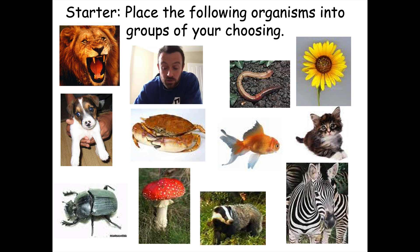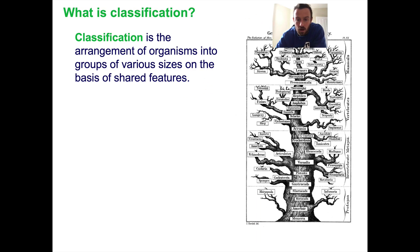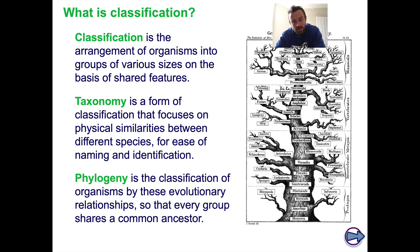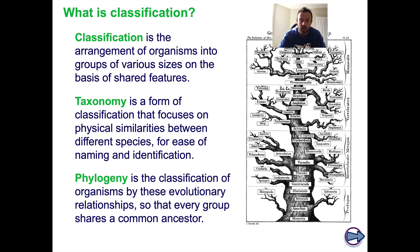One of the first people to do this kind of systematic classification of organisms was a guy called Linnaeus. But first, let's define these terms. Classification is the arrangement of organisms into groups of various sizes on the basis of shared features. Taxonomy is one way of classifying things, mainly concerned with physical similarities and differences — classifying things by just looking at their appearances. And then later on, in another lesson, I'll be looking at phylogeny, which is how we classify organisms based on their evolutionary relationships.